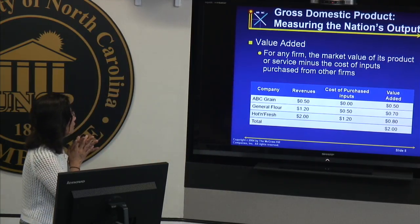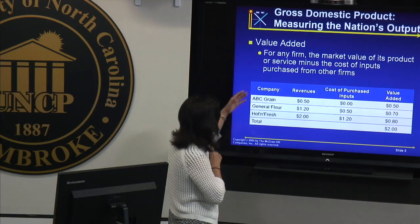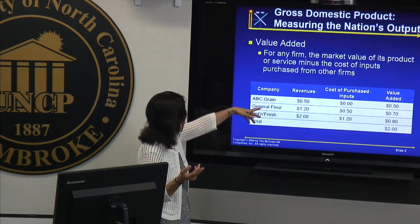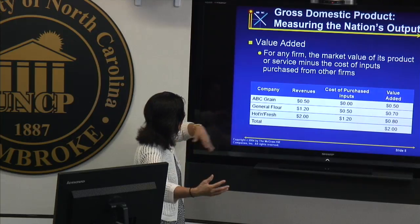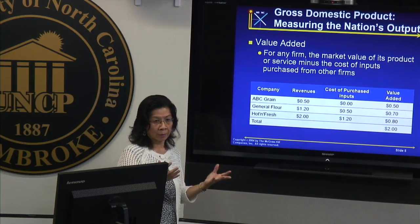In the value added method, you're counting part by part from upstream to downstream production. When you add up all the parts along the production line, your final value should equal the value of the final goods and services. The definition of value added for any firm is: the market value of its product or service minus the cost of inputs purchased from other firms — meaning the previous process in the production chain.